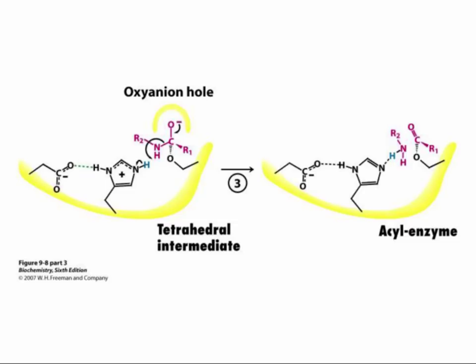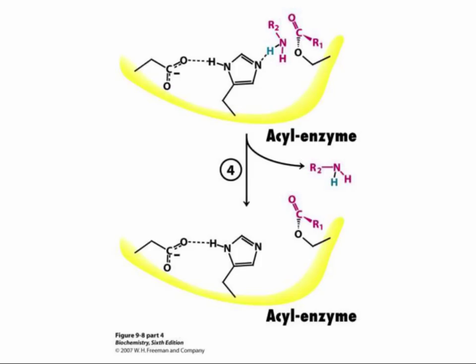In step three, the tetrahedral intermediate breaks down, cleaving the amine product from the rest of the substrate. The portion of the molecule that remains covalently bound to the active site serine corresponds to the carboxylic acid part of the substrate — this is the acyl enzyme intermediate, which is much more stable than the anionic intermediates. Under certain conditions, serine proteases can be isolated with the acyl enzyme intermediate covalently attached to the active site serine. In step four, the amine product picks up a proton from the active site histidine and diffuses away; in this reaction the histidine is acting as an acid or proton donor.